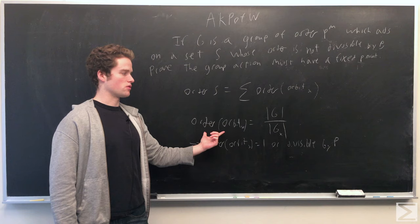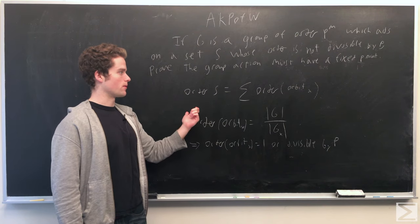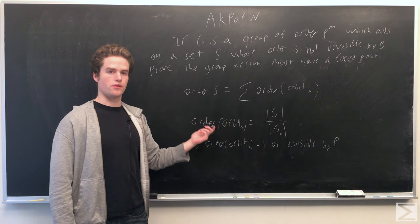And so at least one of these orders must equal 1. And so we must have an orbit of order 1. And that would be a fixed point.